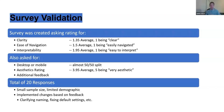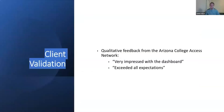Given the scope and time frame of the project, the survey was limited to a small sample size of about 20 responses from ASU. However, it still generated great feedback that led to many significant improvements, like clarifying naming choices and default settings. In future iterations, it would be best to redo the survey with a larger sample size for a more accurate reading. As for client validation, the Arizona College Access Network was very pleased with the dashboard, expressing that they were very impressed and that it exceeded all of their expectations.